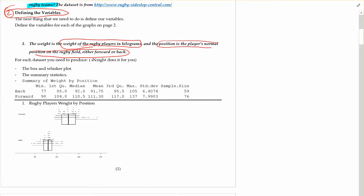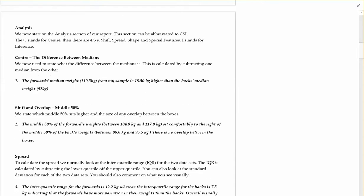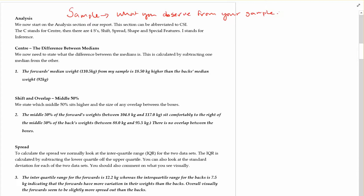Alright, carrying on with our rugby example, we can see that we've generated a bit of information out of InSight with our box and whisker graphs, stop plots, and statistics there. The next thing we're going to be looking at is our analysis. Your analysis here is going to be all about the sample — this whole section is about what you observe from your sample data. You have to be very clear not to talk about the population at all.